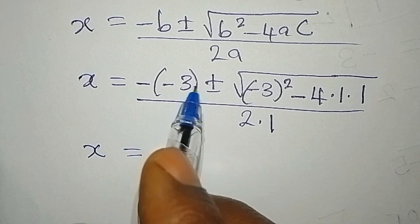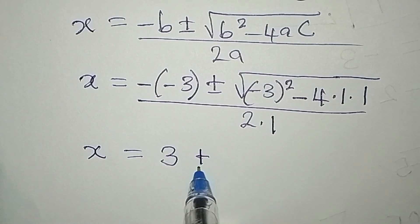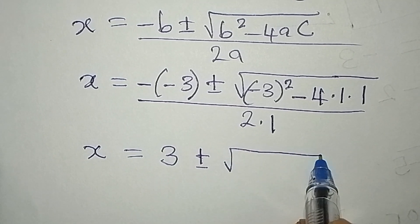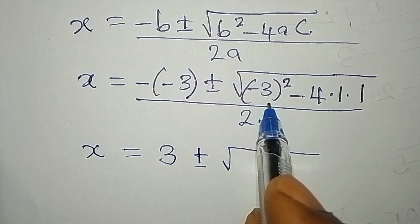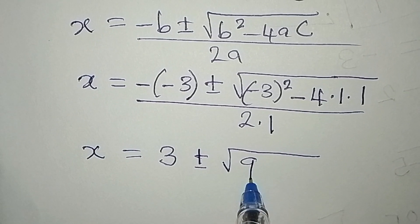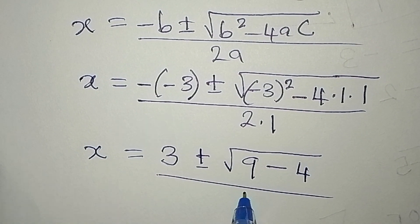Now, x from here will be equal to negative, negative will give positive 3. Plus or minus. Then we have negative 3 to the power of 2 will give 9. Then minus 4. This will be over 2.